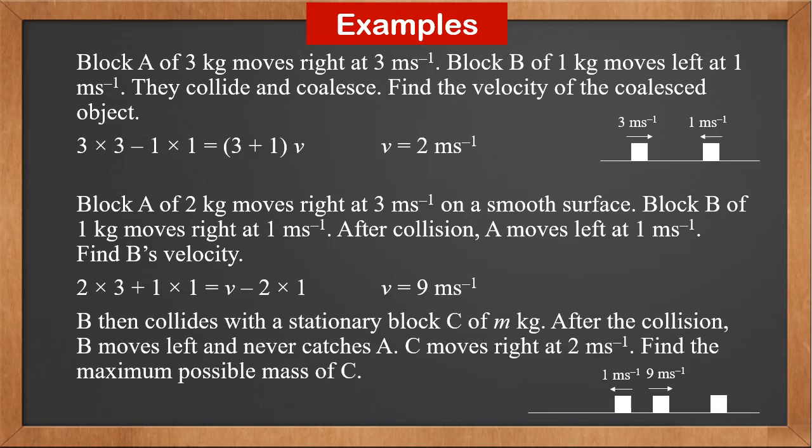B then collides with the stationary block C of M kilograms. After the collision, B moves left and never catches A, and C moves right at 2 meters per second. Find the maximum possible mass of C. Momentum before the collision is 9, since C's velocity is 0. Suppose B's speed after the collision is V; then momentum after is 2M minus V, so V equals 2M minus 9. Since B never catches A, V is less than or equal to 1. Therefore, M is less than or equal to 5. The maximum possible mass of C is 5 kilograms.